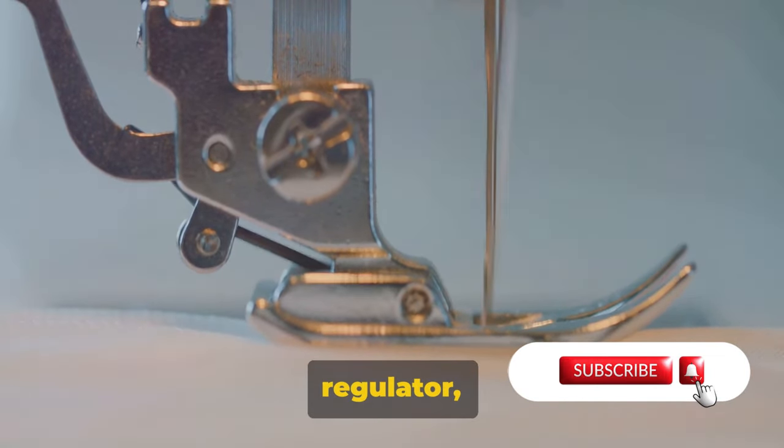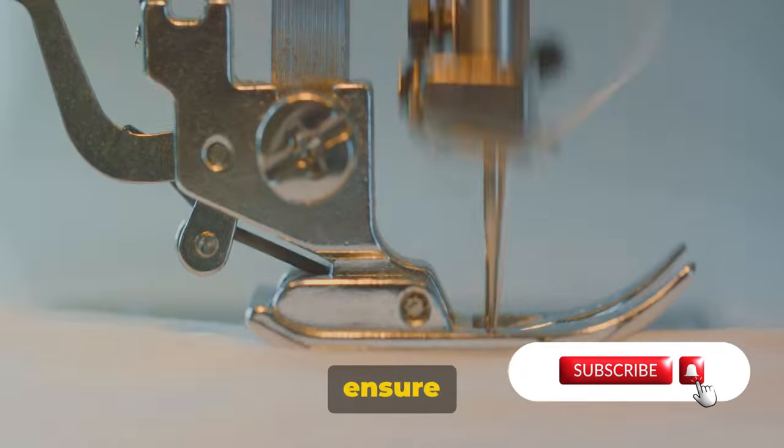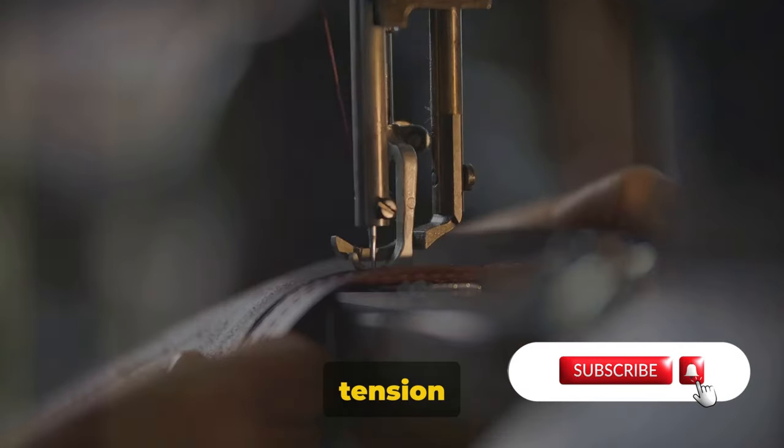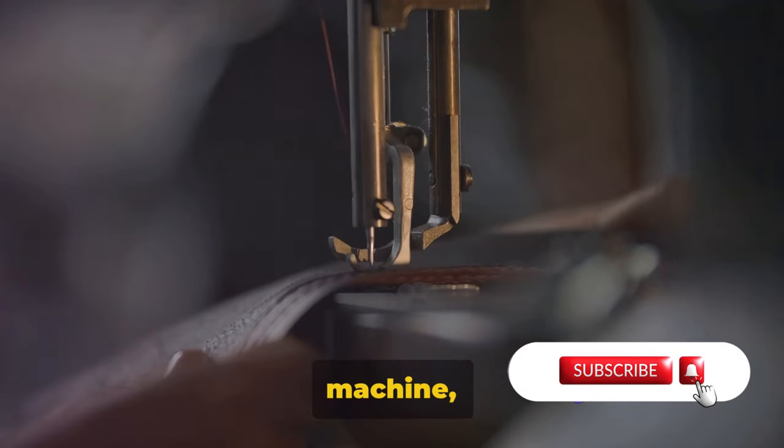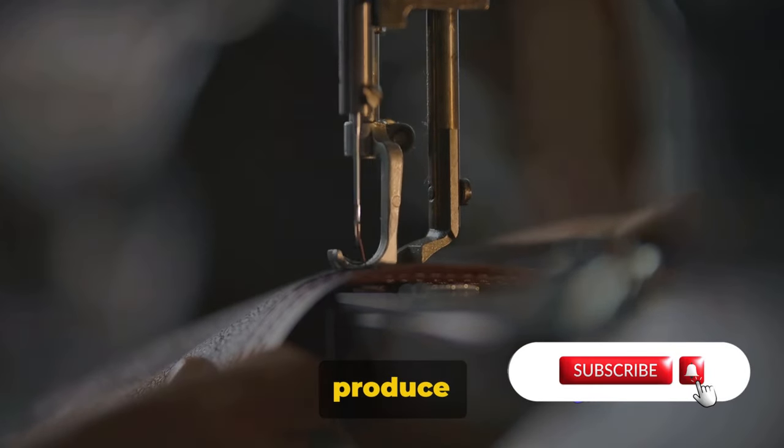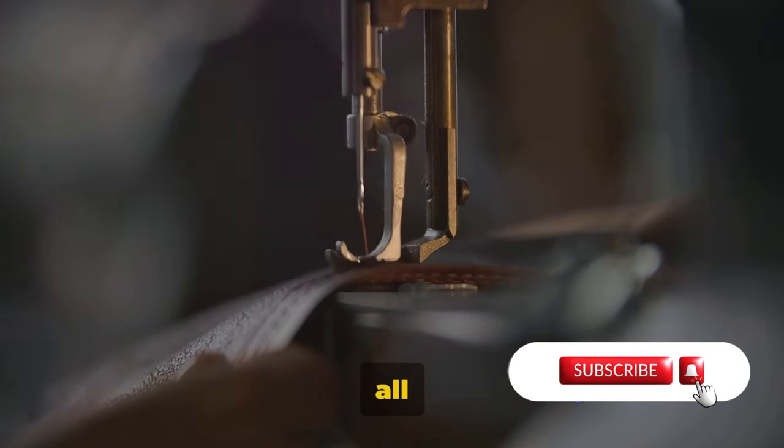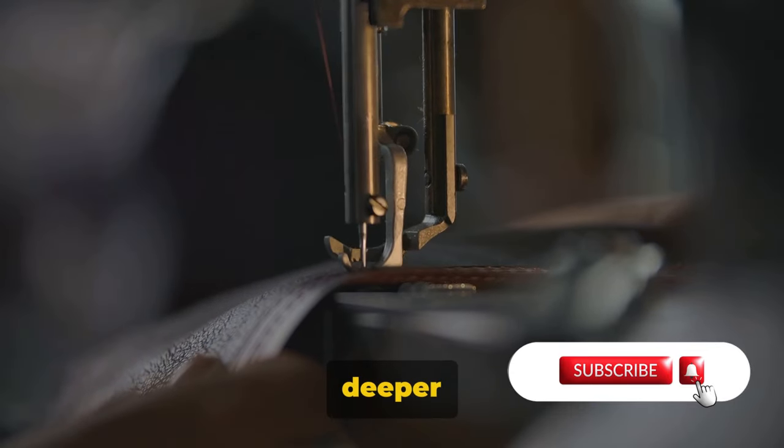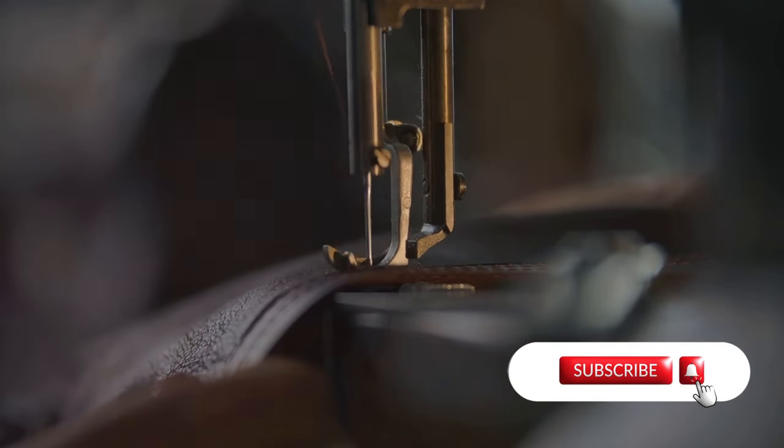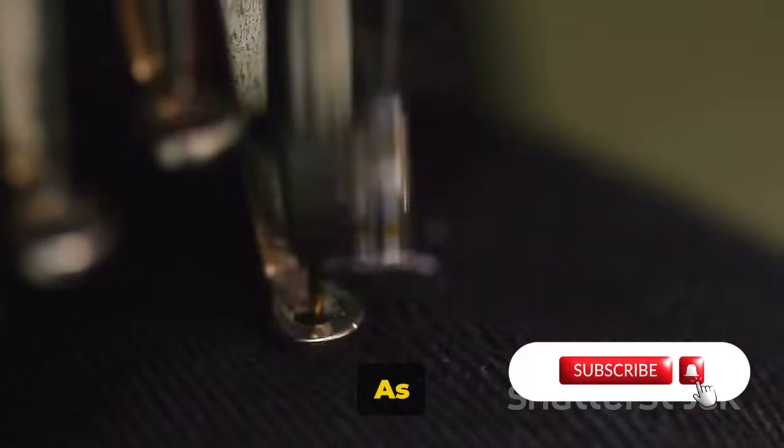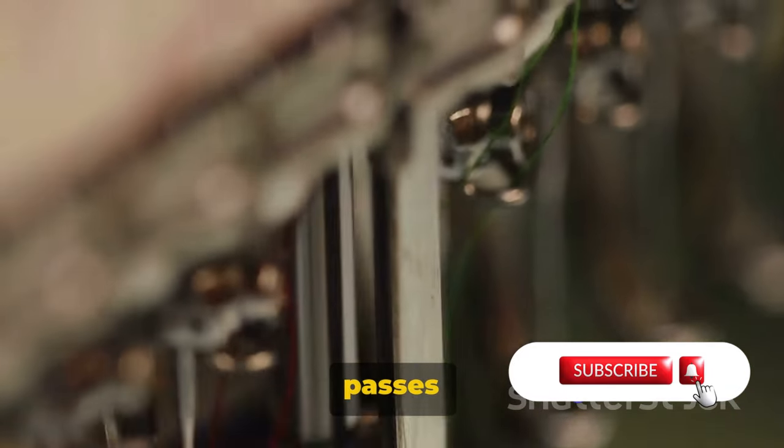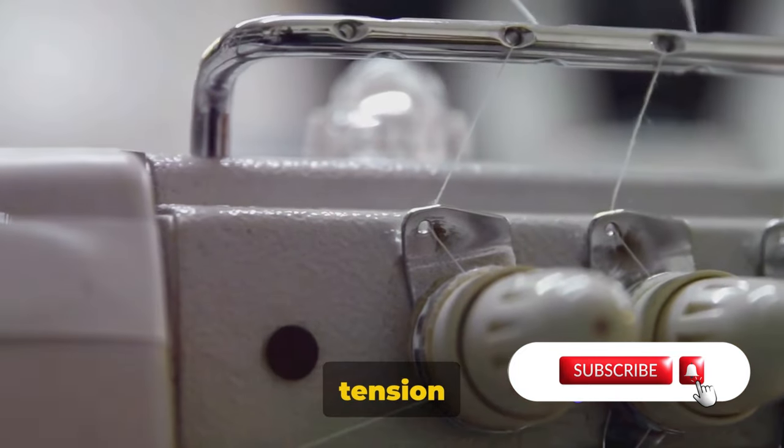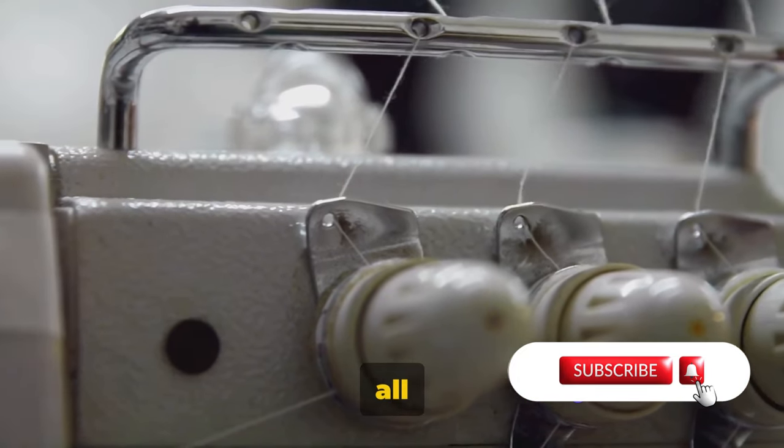But who regulates the stitch length and tension? The tension discs and the stitch regulator, the regulators of the machine, ensure flawless stitches. The tension discs and stitch regulator, two integral components of a sewing machine, work in perfect harmony to produce those immaculate stitches we all admire. Let's dive a little deeper into how they play their roles. Firstly, the tension discs. As the name suggests, these are discs that apply tension to the thread as it passes through the machine. But why is tension so important? Well, it's all about balance.